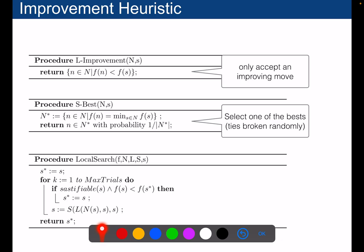The operator N that studies the neighborhoods around the current solution is problem-dependent. The operator L will only keep the ones that are improving the solution S. So we will only keep the improving solutions compared to S with this operator L improvement.